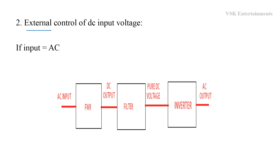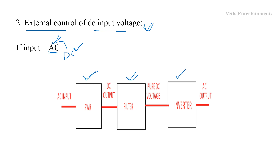Coming to the second method — external control of DC input voltage. This method is applicable if the input is AC. Since the inverter requires DC as input, we have to convert this AC to DC using some external components. The external components used are a full wave rectifier and a filter. Using these two components, we convert AC to DC and apply that DC to the inverter as input, giving us the controlled AC output voltage.